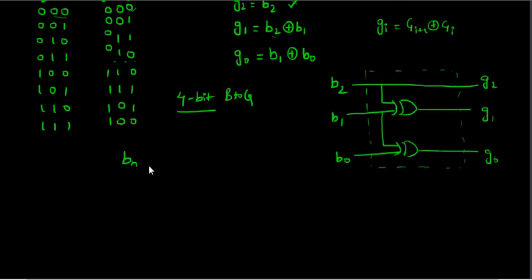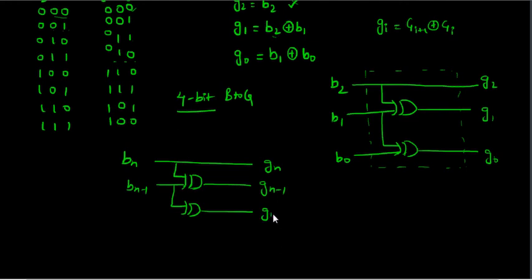If it is n-bit, if you are given b_n, obviously g_n will be same. We will have an XOR gate to give g_(n-1) and take b_(n-1). Similarly if we take like this, g_(n-2) it will take b_(n-2). And so on going further if we have b0, b1, it will be taken and used with the XOR and we will get g0. So this is how a circuit looks for n-bit binary to gray code converter.